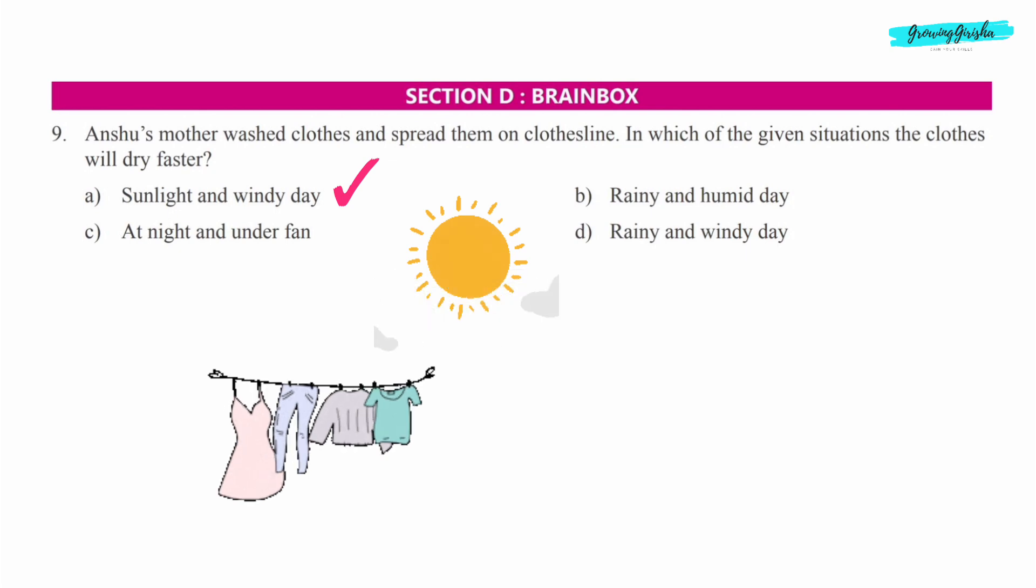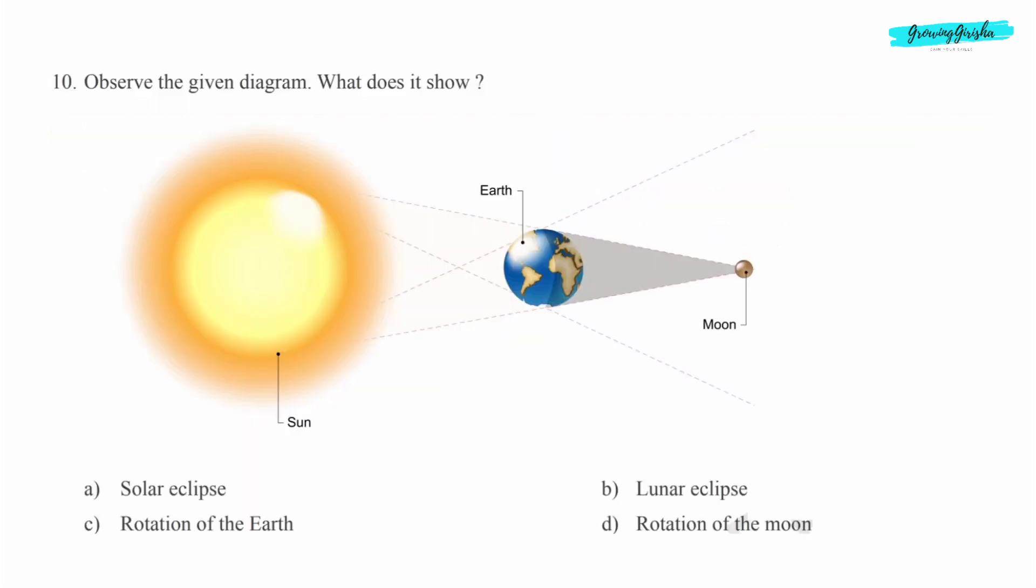Option A: sunlight and windy day will be the correct answer. Observe the given diagram. What does it show?